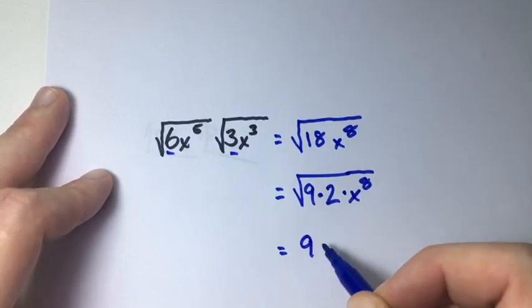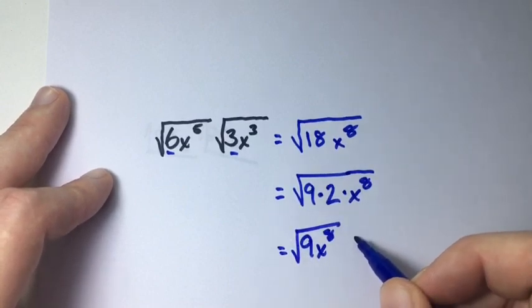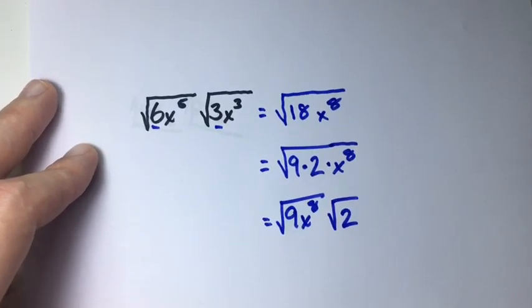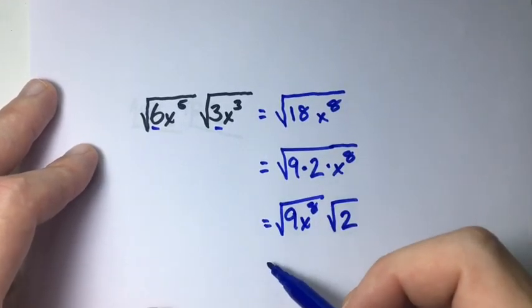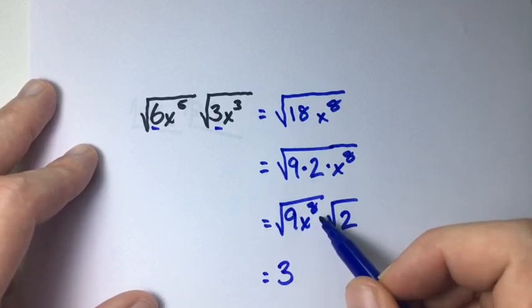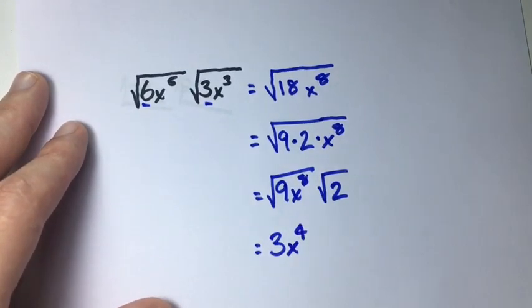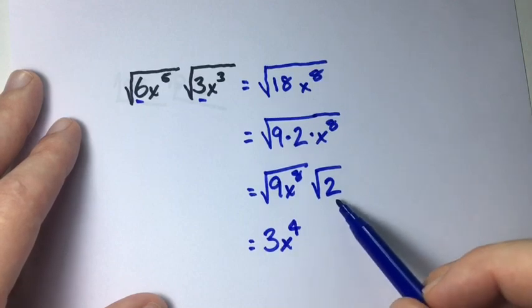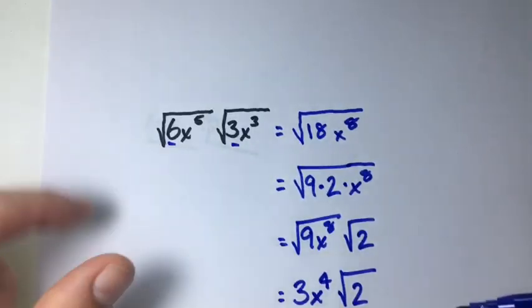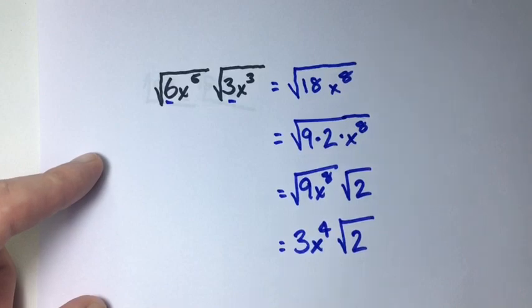Let's put the perfect squares together: the square root of 9x to the 8 times the square root of 2. The square root of 9 is 3, and the square root of x to the 8 is x to the power of 4. We can't simplify the square root of 2, so our final answer is 3x to the power of 4 times the square root of 2.